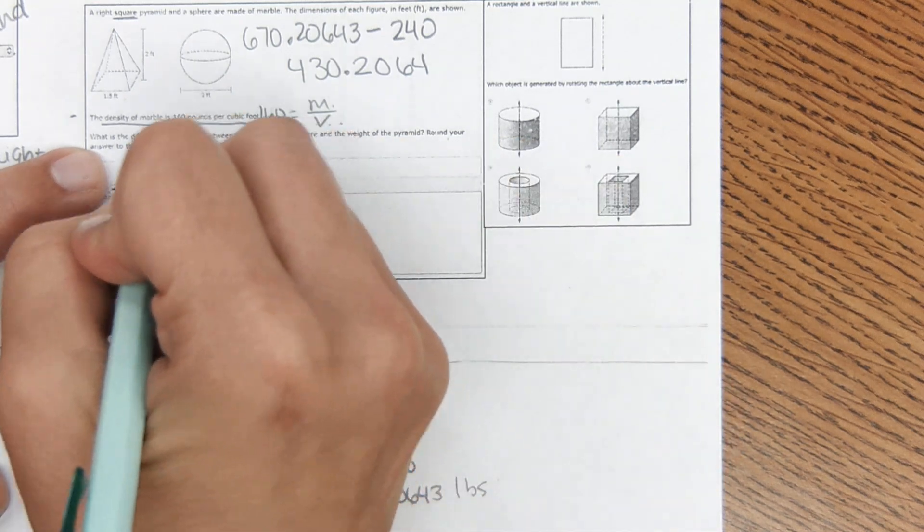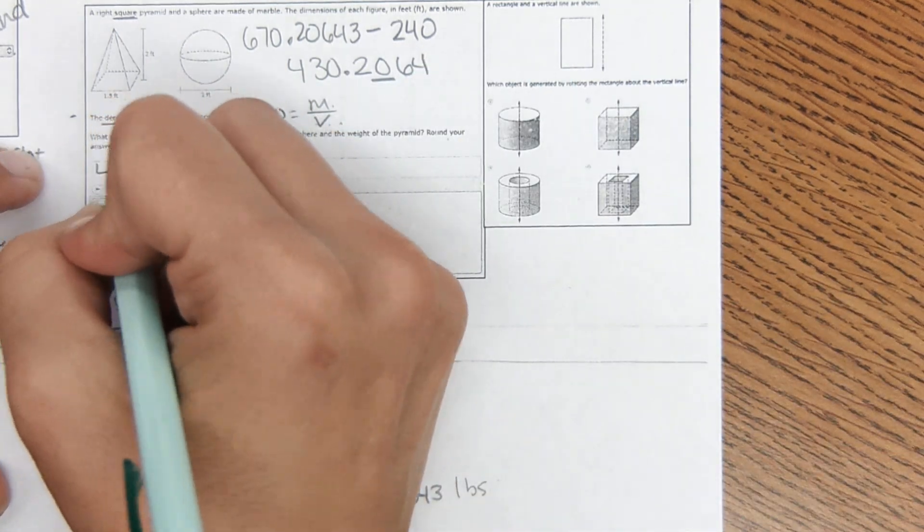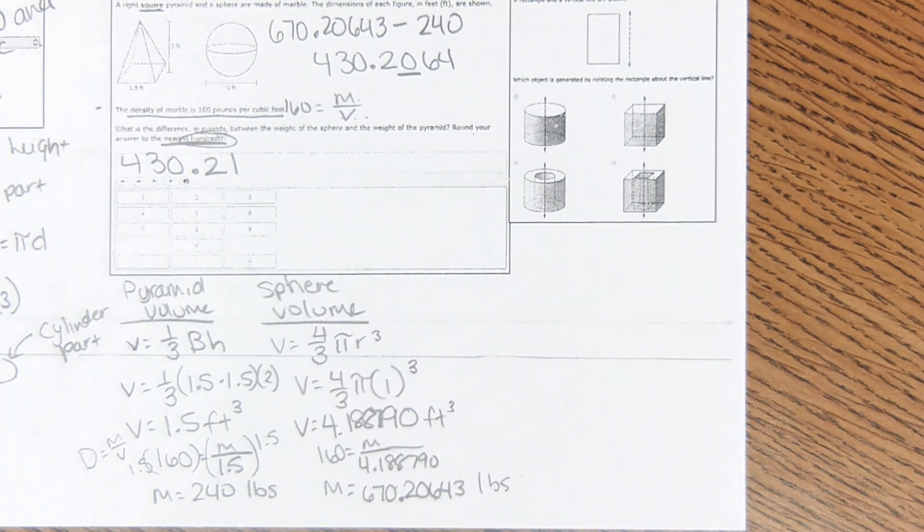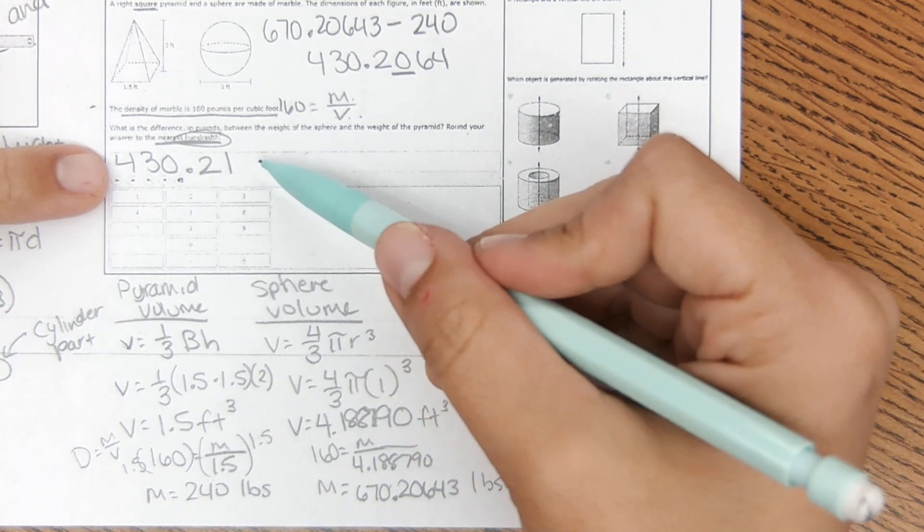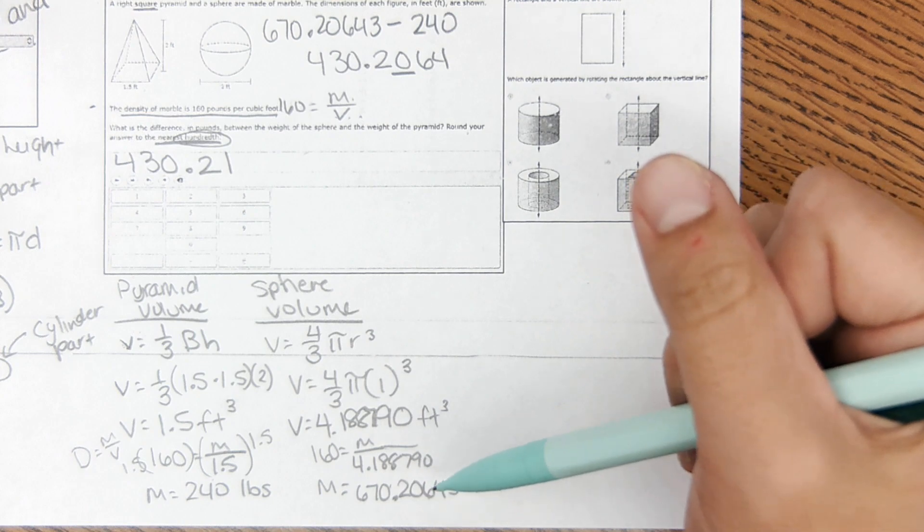It says to round to the nearest hundredth, which would be this place, so I get 430.21. I'm going to put that in the box. Something I've noticed with these, when it comes to the answer key, it'll accept a range of answers, so if you didn't quite round it the same way I did,